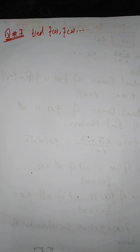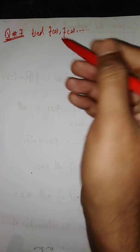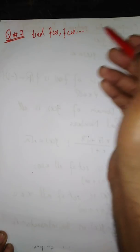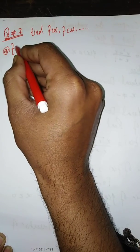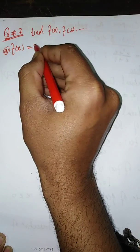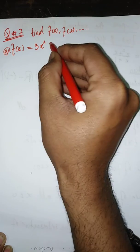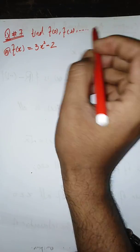Hi dear students. In this video I am solving question number seven. The statement is on your screen: we are given a function and two input values. We have to find f(0), f(2), f(-2), and so on. Our function is f(x) = 3x² - 2.